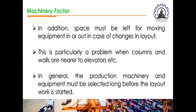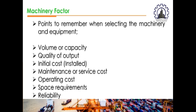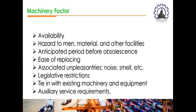This is particularly a problem when columns and walls are near elevators. In general, production machinery and equipment must be selected long before layout work is started. The best plant layouts have the right person, place, machine, materials, service, space, waiting, and change at the right time. Key points to remember when selecting machinery and equipment include: volume or capacity, quality of output, initial cost, maintenance or service cost, operating cost, space requirements, reliability, availability, hazard to men and materials, anticipated period before obsolescence, ease of placing, associated unpleasant factors such as noise and smell, legislative restrictions, and auxiliary service requirements.